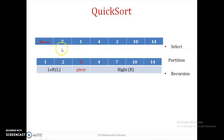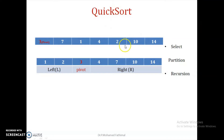So I points to 7, which is greater than the pivot element 3, so I will stop. Now come to J. J is pointing to 14, which is greater than the pivot element, then move. Next, J points to 10, which is also greater than the pivot element. Now J comes to 3, which is lesser than the pivot element, so J will stop. Already I is stopped at this position and J is stopped at this position.